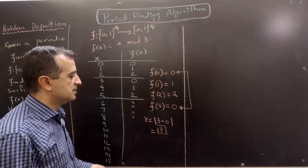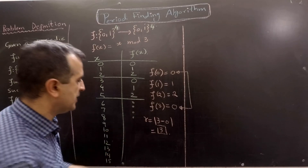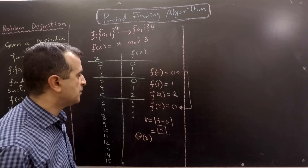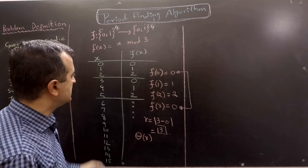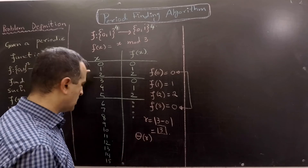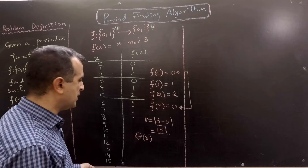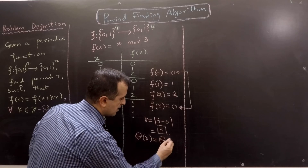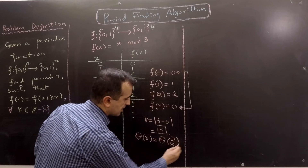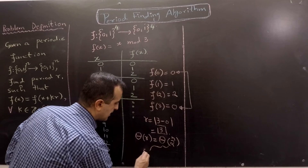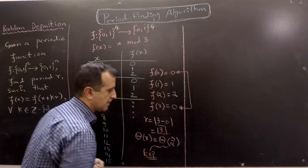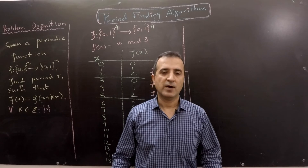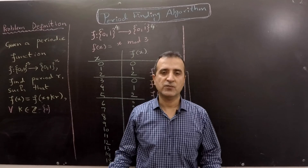So our period R in this case is 3 minus 0 equals 3. One might say this is not so bad since we found the period in O(R) time. However, R the period could be proportional to the number of inputs. In this case the period was 3 but the number of inputs was 16. In other cases our period could be almost equal to the size of the input. Therefore our running time could be O(2^n), which is exponential, and we know exponential running time is not good.